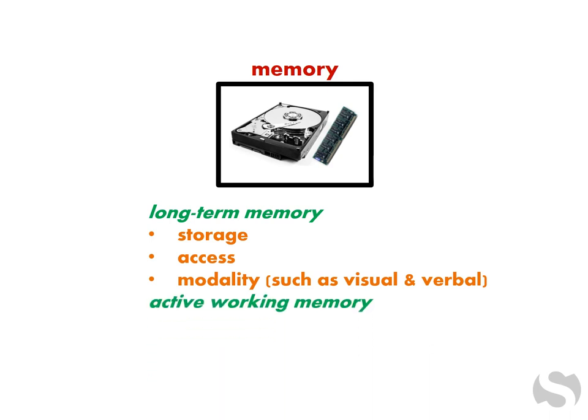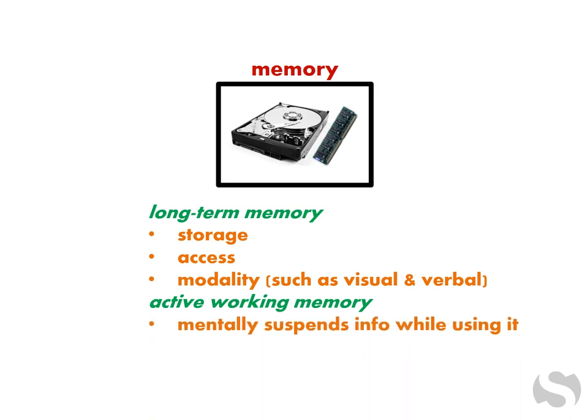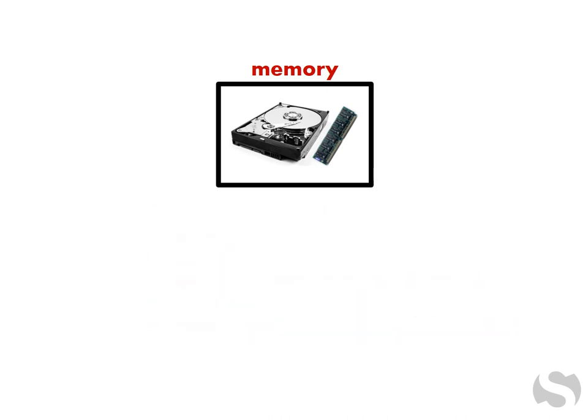Active working memory is the mind's RAM where work is done with newly acquired information, like task instructions, or that is accessed from long-term memory. It is a mental space where info is manipulated or used, such as when solving mental math problems or recalling previously encountered details when reading.